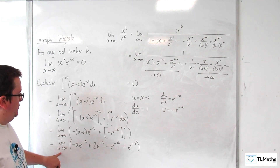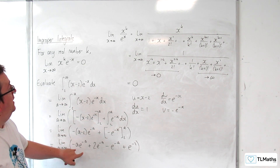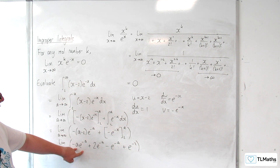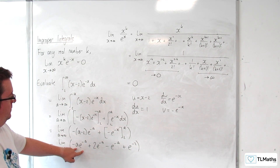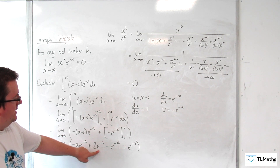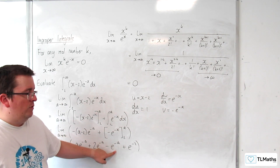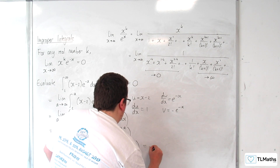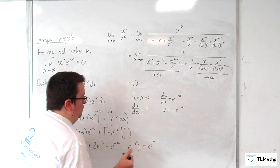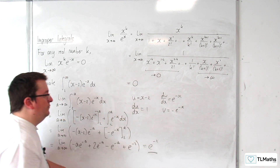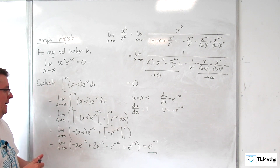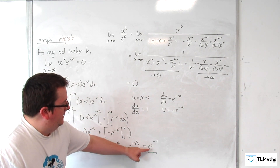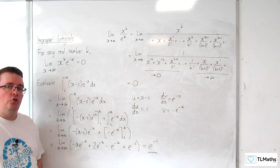Now, as a tends to infinity, we know by the rule established earlier that a times e to the minus a tends to 0, and e to the minus a also tends to 0. So each of those terms will tend to 0, and what's going to be left is e to the minus 2. And so that is the value of our integral.